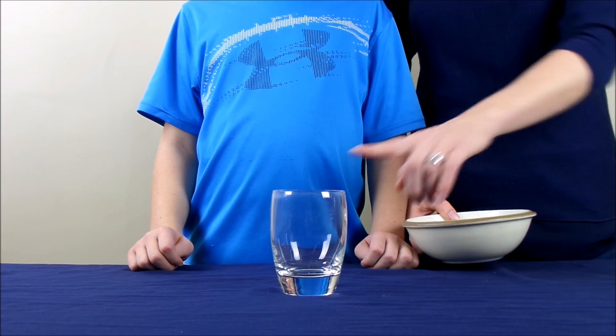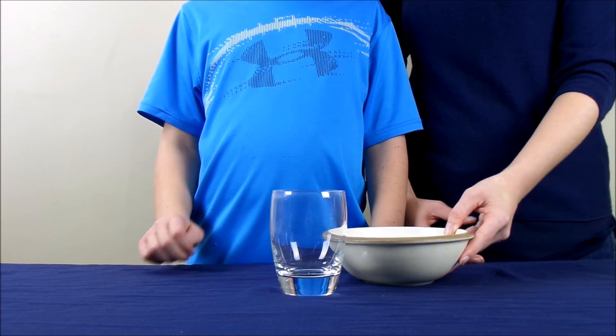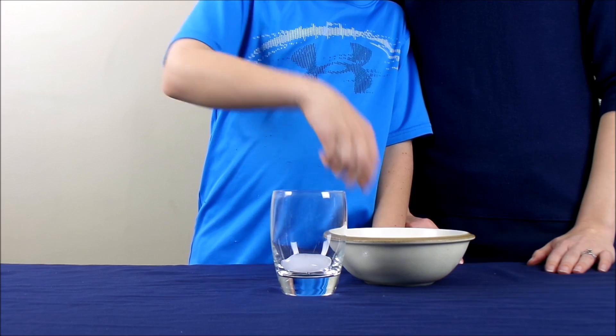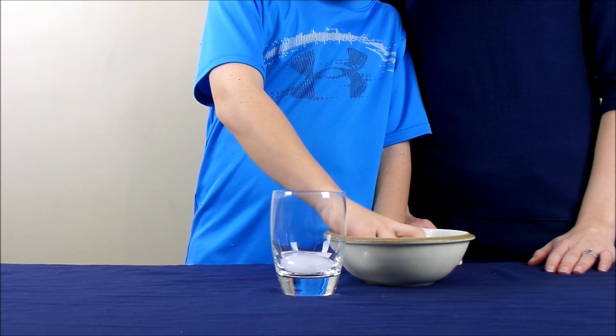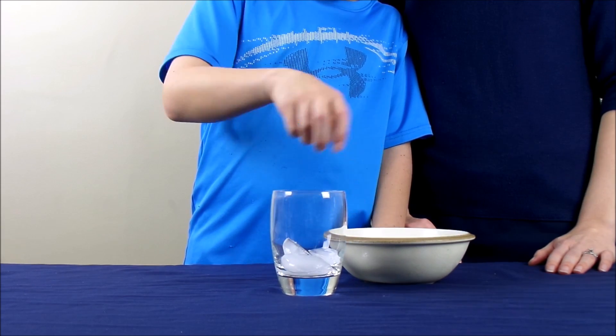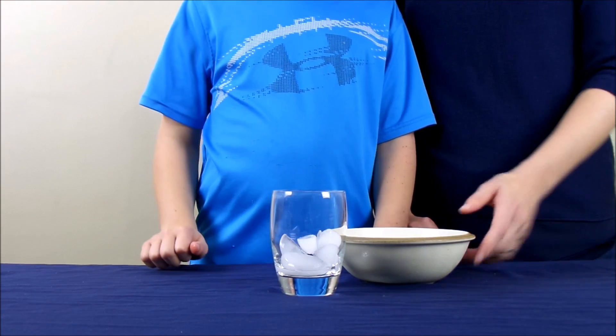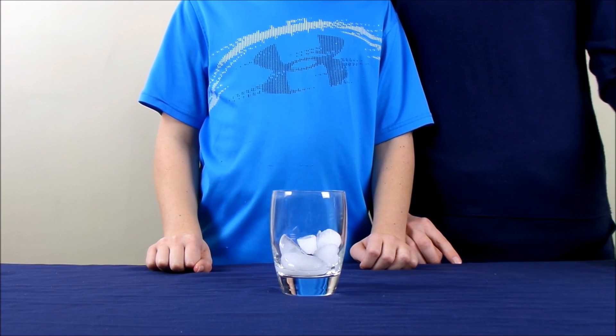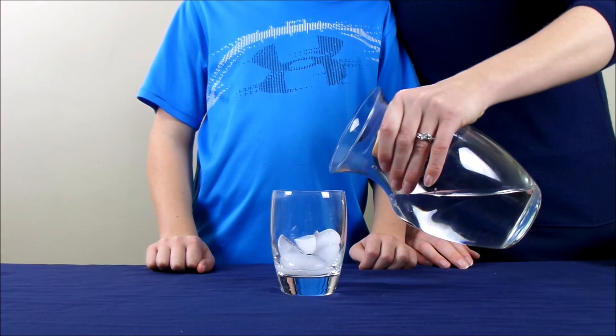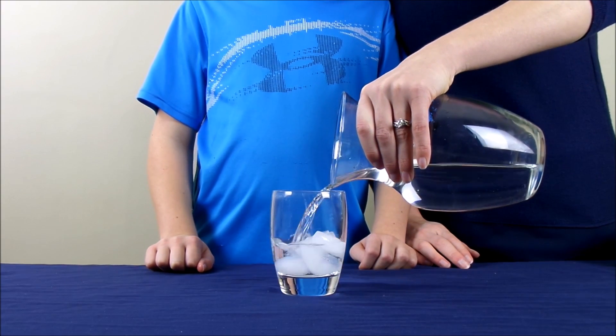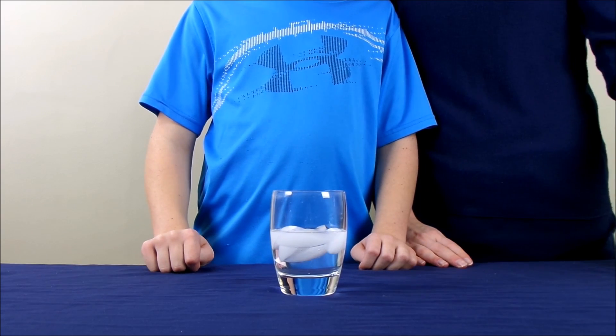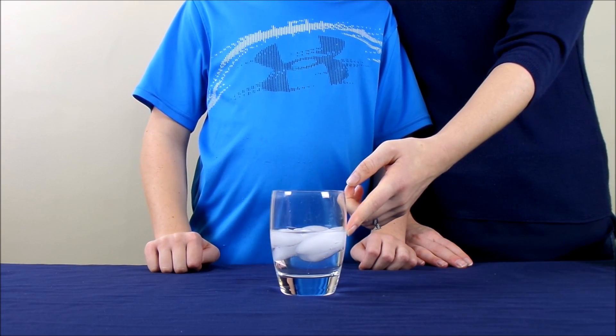To begin the experiment, we're going to take an empty glass and we're going to fill it with about five or six ice cubes. After the ice is in the glass, we are going to add a little bit of water. As you can see, the glass is about halfway full with the ice and the water.